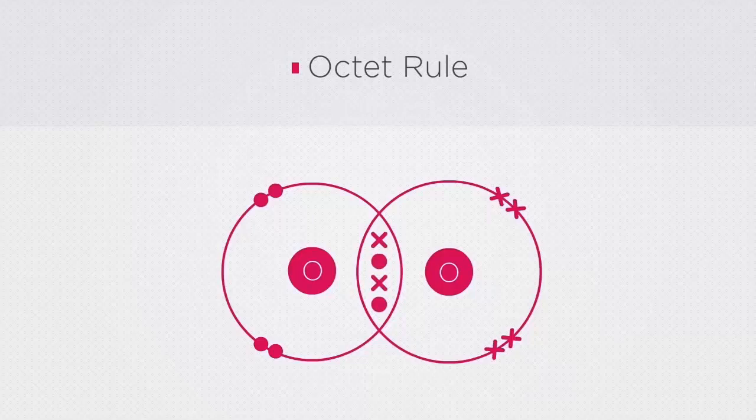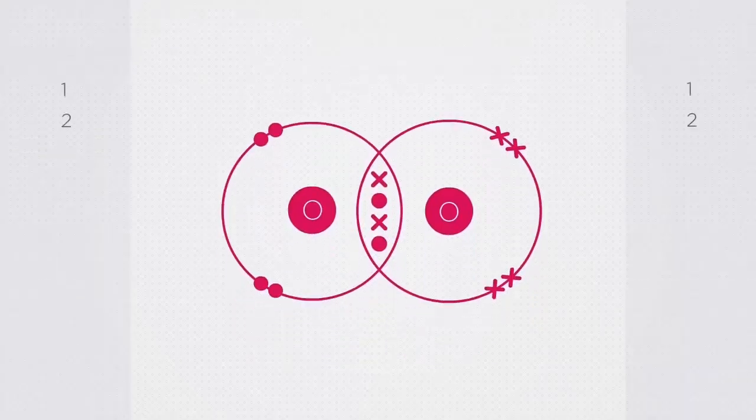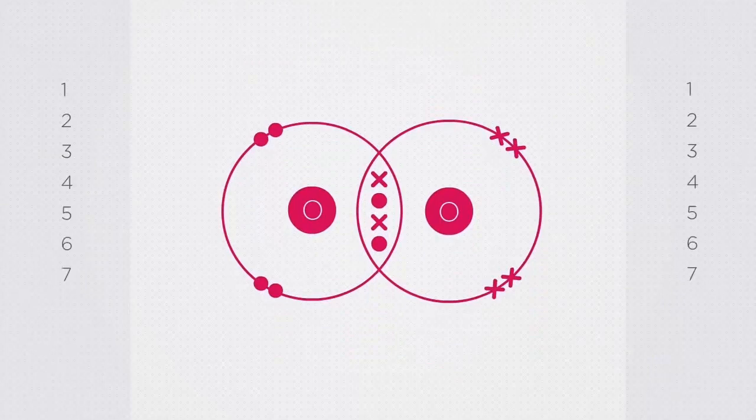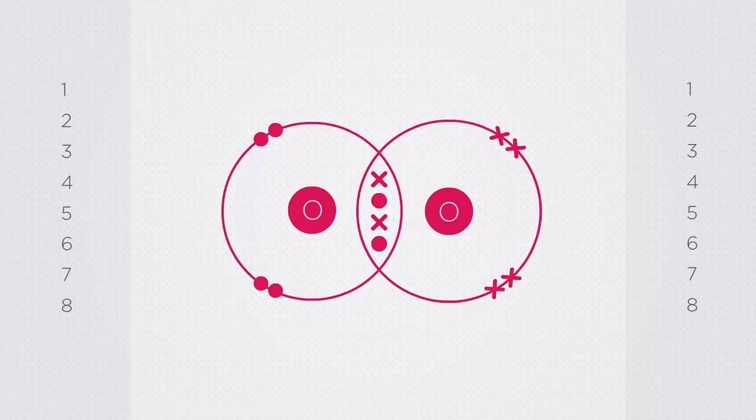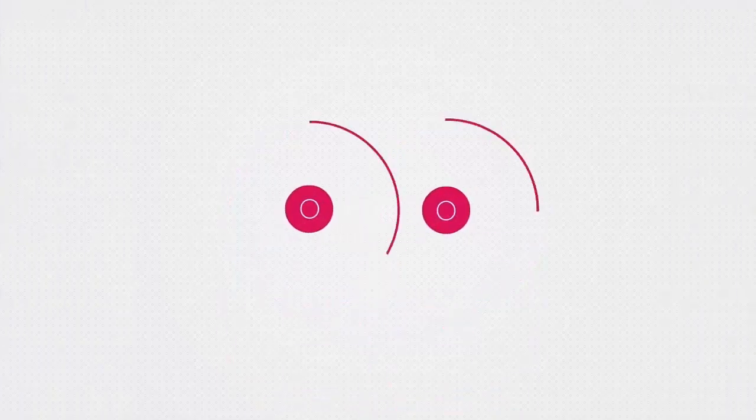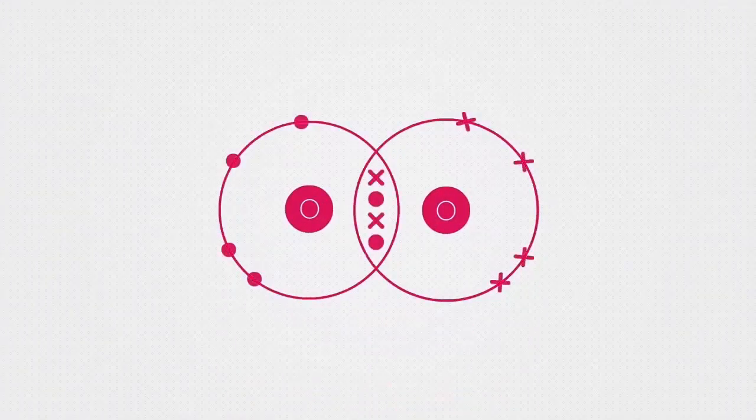If you count the number of electrons in each shell, you should notice that each shell has eight electrons shared over two shells, shown by the dots for one oxygen atom and crosses for the other, which is the ideal. Whenever you draw a dot and cross diagram, wherever possible you should ensure that the electrons are equally spaced and that they are paired.